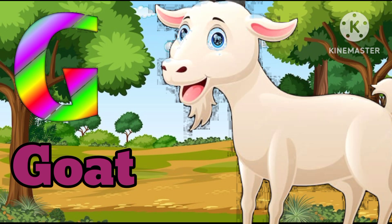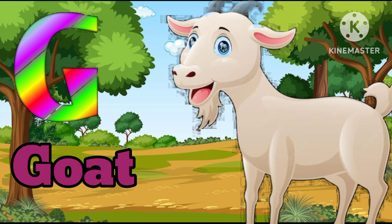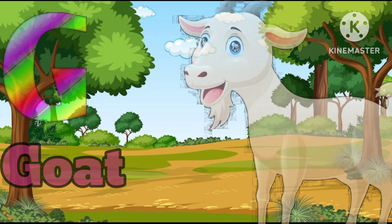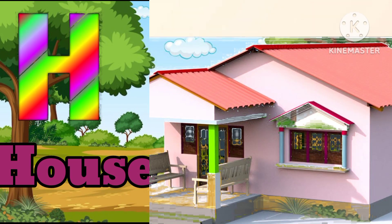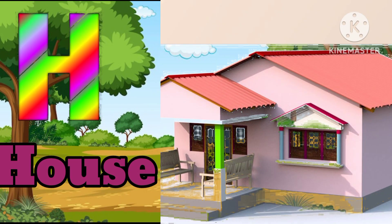G for goat. Goat means buckri. H for house. House means garden.